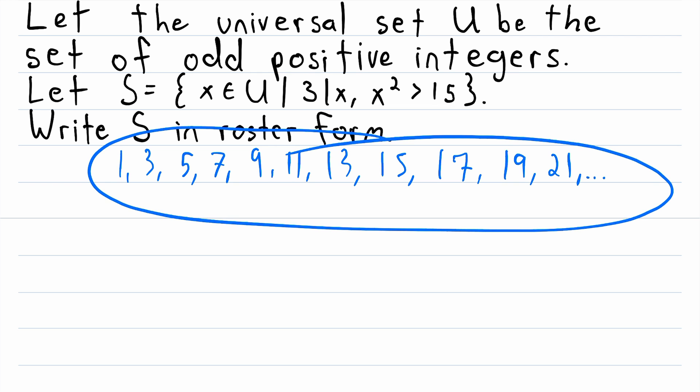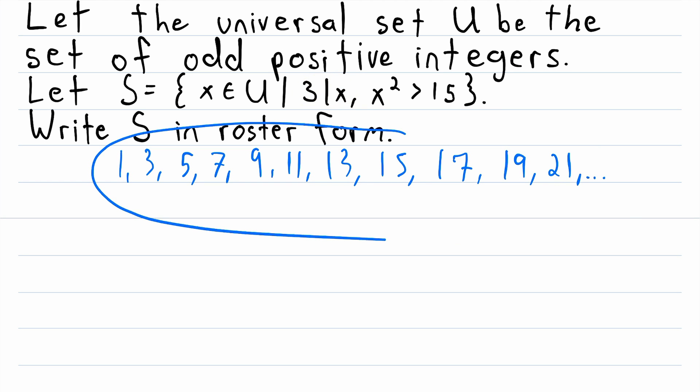Then we'll apply the second condition to this list of numbers. The second condition is that 3 must divide every element of S. That means that every element of S has to be a multiple of 3. So applying that condition to this list of numbers leaves us with 3, 9, 15, and 21.